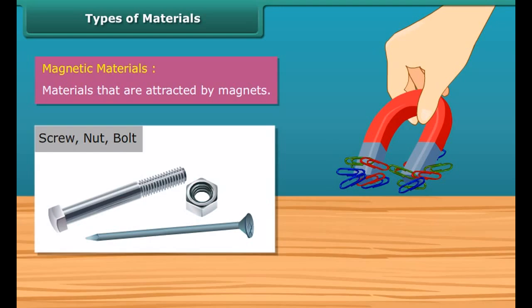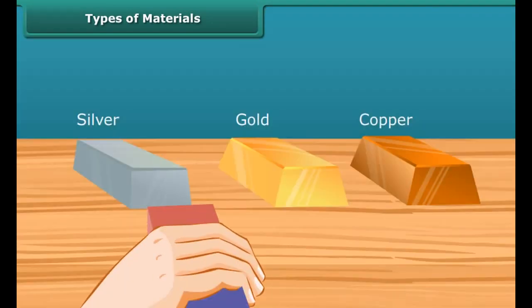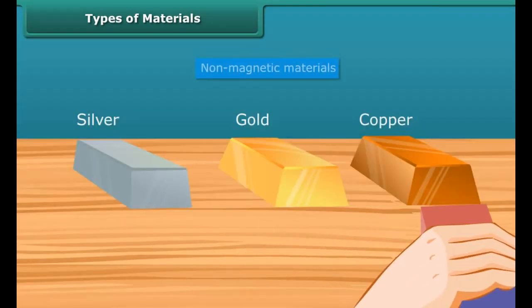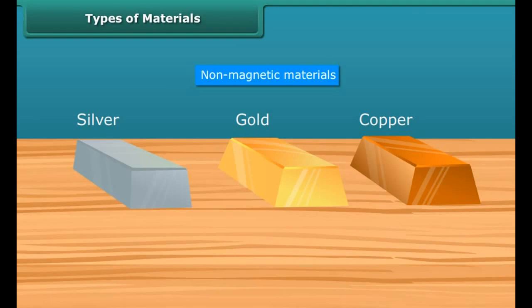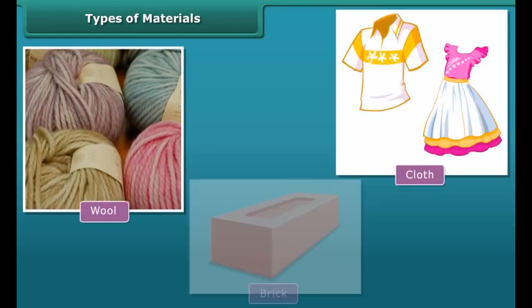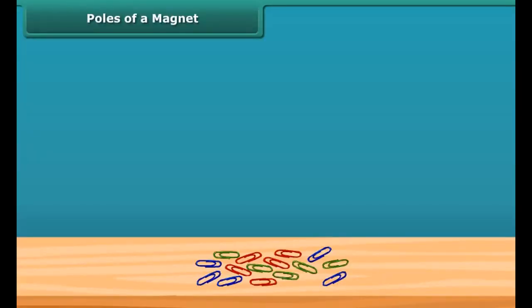Types of materials. Now, let us look at the types of materials. Materials that are attracted by magnets are called magnetic materials. For example, screws, nuts, and bolts are magnetic materials.